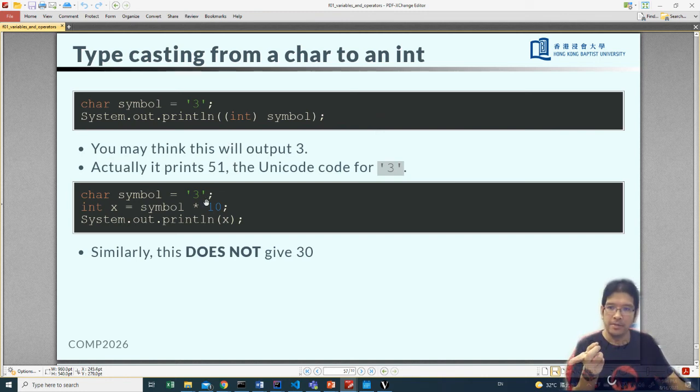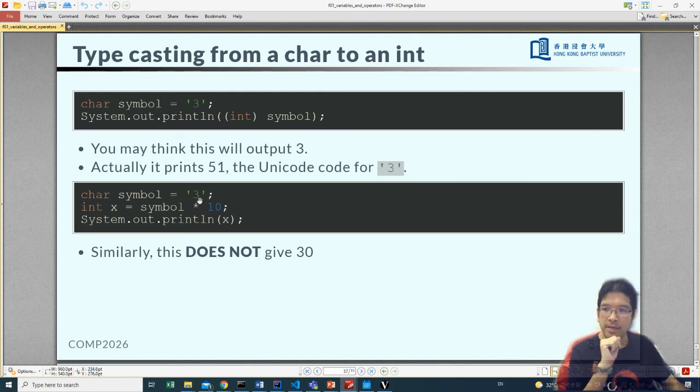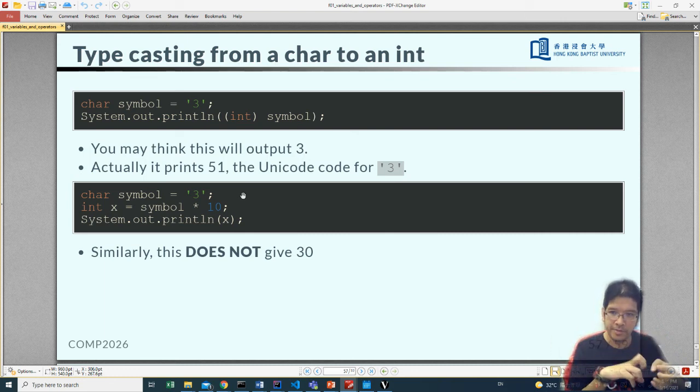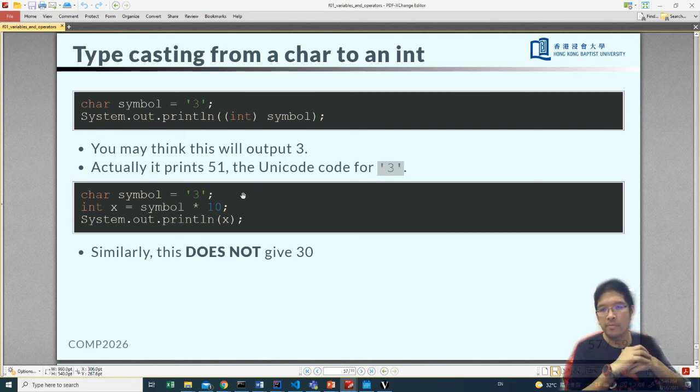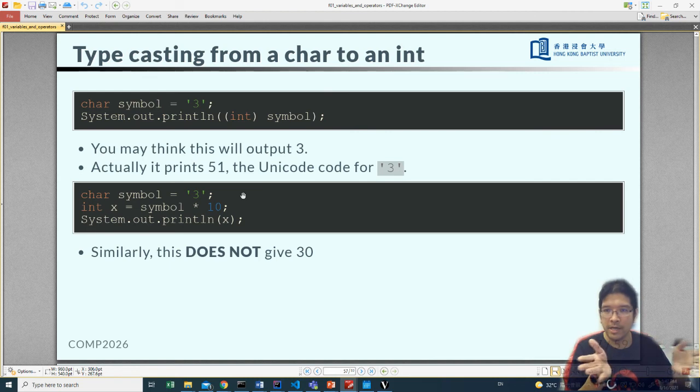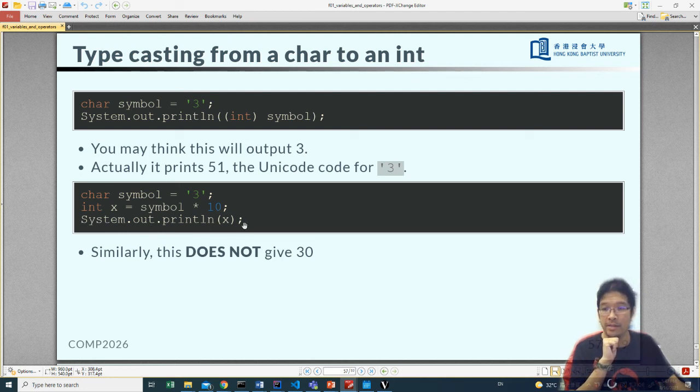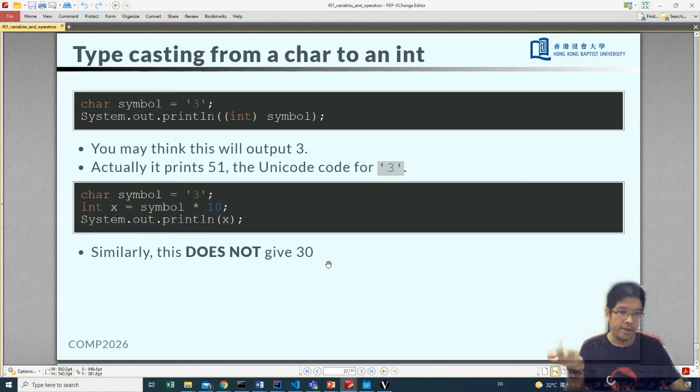Now, similarly, if you do things like this one, let's say you have the character 3, and you want x equals to symbol times 10. Now, what is happening here is this symbol will be cast to integer first, and then perform the operation multiplied by 10. A character itself cannot use multiplication operations. You have to be casted to integer first. So this is automatically widening casting. So it converts to 51. And 51 times 10 gives you 510. And so here, we will actually print 510. It does not give you 30.